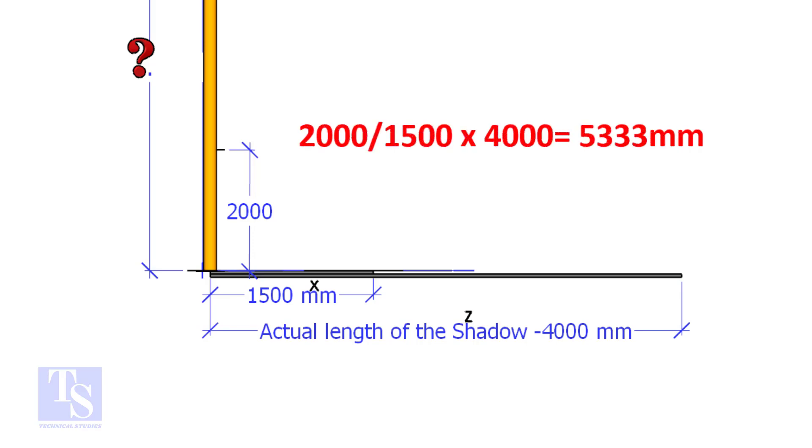The height of the pole will be 2000 divided by 1500 multiplied by 4000 equal to 5333mm.